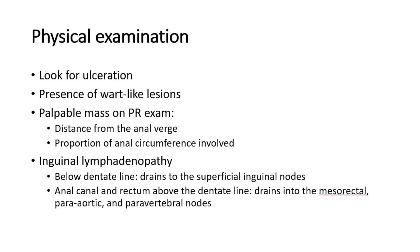On examination, the perineal and perianal regions should be screened for any ulceration or the presence of wart-like lesions. Any mass felt on PR exam should be documented along with its distance from the anal verge and the proportion of anal circumference involved. The inguinal lymph nodes should be examined for any lymphadenopathy. Lymph from the area below the dentate line drains to the superficial inguinal nodes, whereas the anal canal and rectum above the dentate line drain into the mesorectal, para-aortic, and paravertebral nodes.